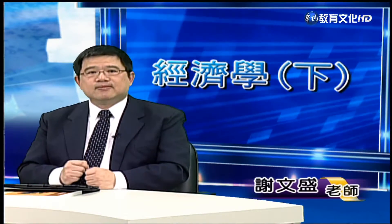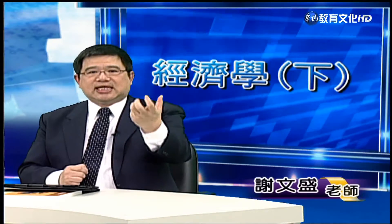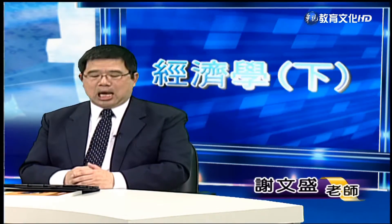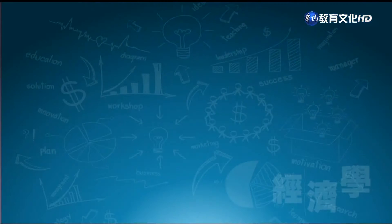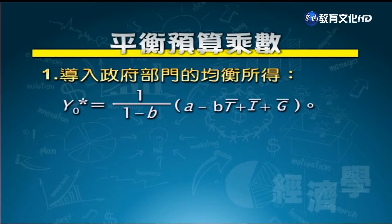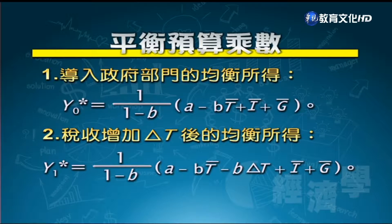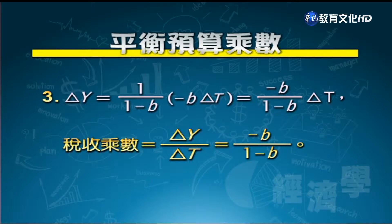政府支出乘數為 1/(1-B)，即政府支出增加1塊，產出增加 1/(1-B) 塊。租稅乘數則不同：租稅 T̄ 前面有係數 -B，所以租稅增加1塊時，所得減少 B/(1-B) 塊（分母為 1-B，分子為 -B）。